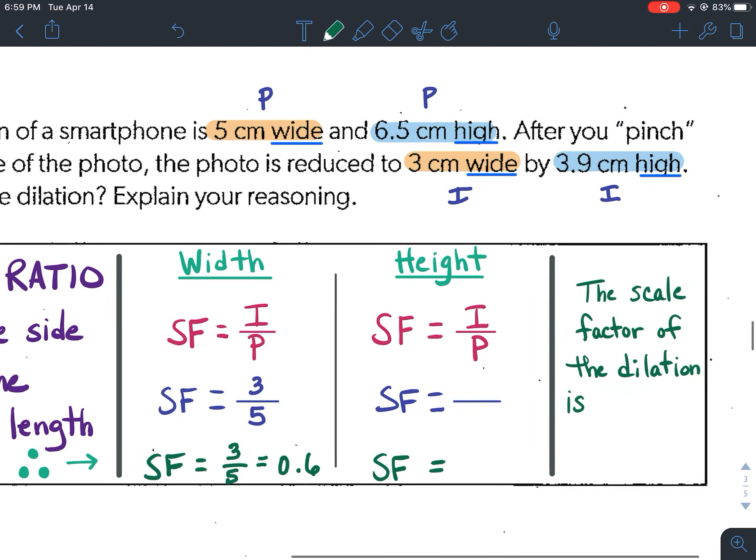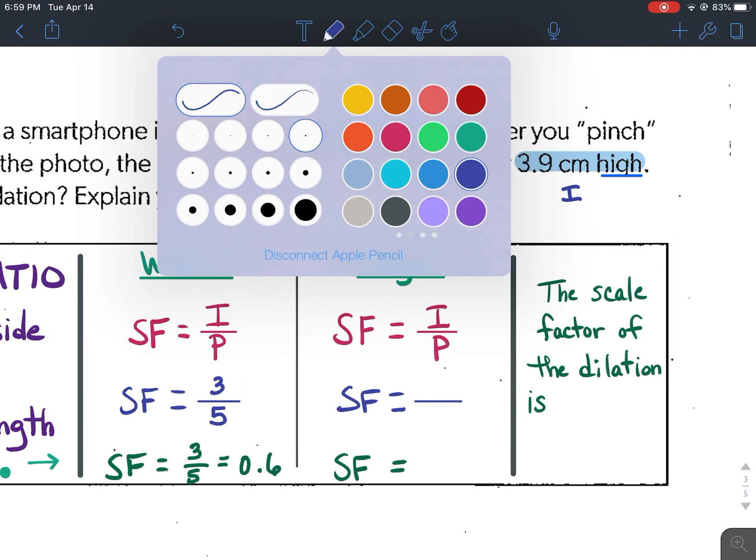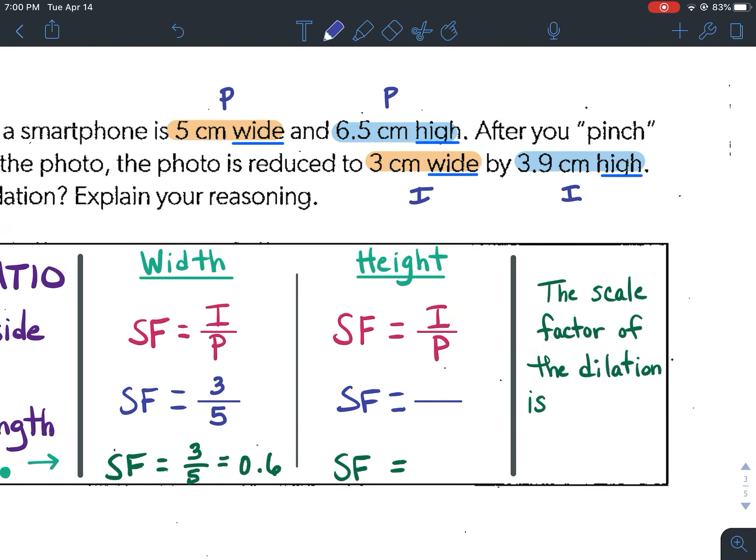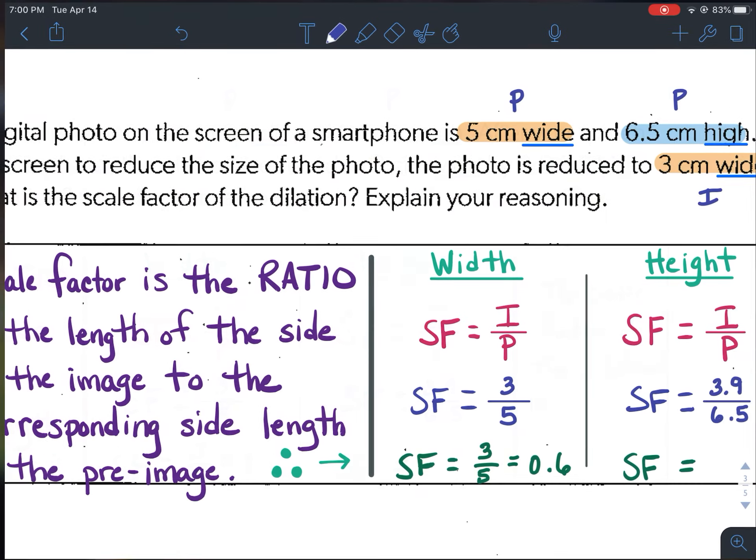We should get the same answer when we find the height. The height of the image is 3.9. The height of the pre-image is 6.5. So if we take 3.9 and divide it by 6.5, we get 0.6. So we got the same thing.